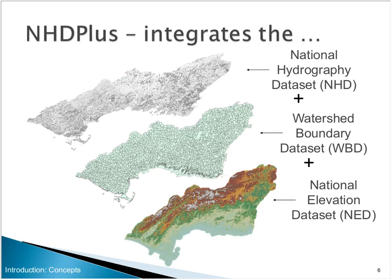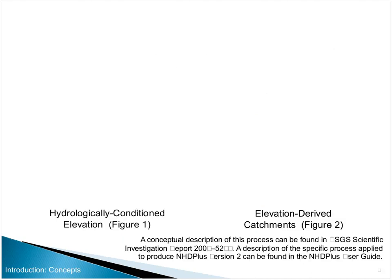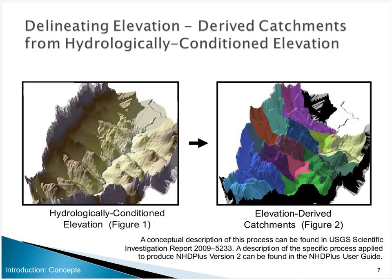We needed to know the drainage area for each stream segment in the 100,000 scale dataset, so we needed to derive what we now call catchments. We combined three datasets: the stream network from the 100,000 scale dataset, what watershed boundary data was available — which was less than 10 states' worth at that point — and the 30-meter National Elevation Dataset. We used the WBD to wall up the ridge lines, and burned the blue lines from the NHD into the elevation so that the low spots in the elevation aligned with the streams. That's the background for our preparation for watershed delineation in GIS, and that's how we created the catchments.